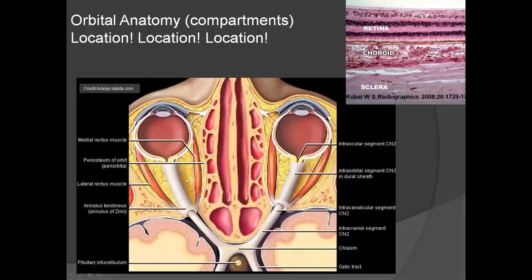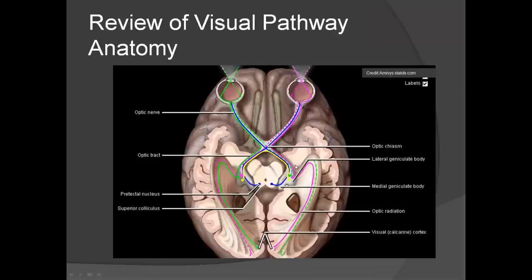The extraocular muscles, fat, and cranial nerve 2 (the optic nerve) are visible here. The paranasal sinuses and pituitary infundibulum are also shown. The visual pathway: half of the information crosses at the optic chiasm — 50% crosses the midline — then travels via the optic tract and optic radiation to the occipital lobe, which controls vision. This is the visual cortex in the occipital lobe.